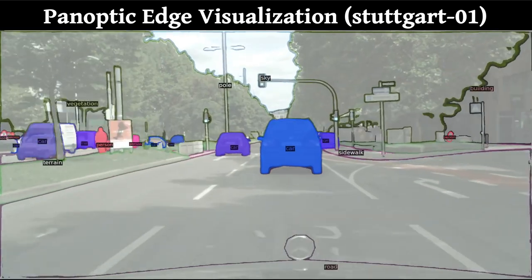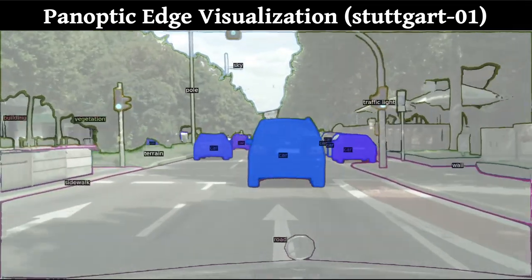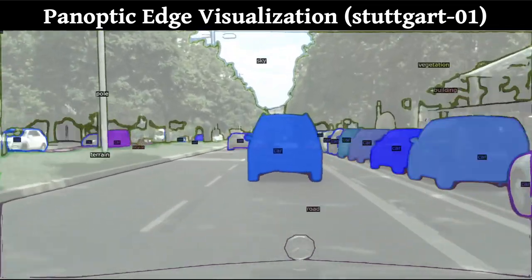The prediction is robust against small instance objects, environment-cluttered conditions, and overlapping cases.